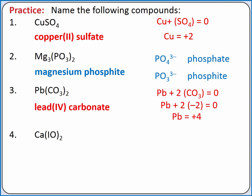In our last example, calcium is a type 1 metal, so we don't need to include its charge in the name. To determine the name of our polyatomic ion, we know iodate is IO₃⁻. If we remove one oxygen atom from iodate, we have iodite. If we remove one more oxygen atom, we have IO⁻, which is hypoiodite.